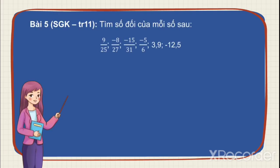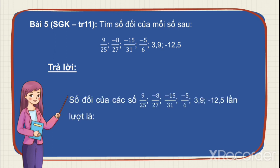Bài 5: Tìm số đối của mỗi số sau. Để tìm số đối, ta chỉ cần đổi dấu âm và dương. Số đối của 9 phần 25 là âm 9 phần 25; âm 8 phần 7 là 8 phần 7; các số còn lại tương tự: 15 phần 31, 5 phần 6, âm 3 phần 9, 12 phần 5.